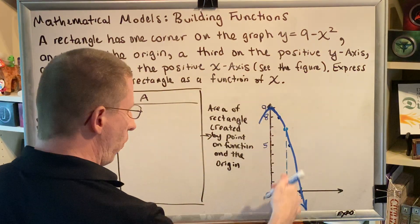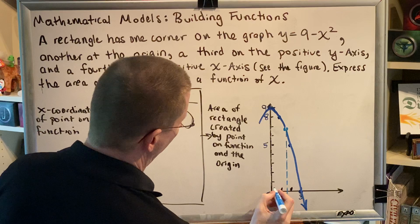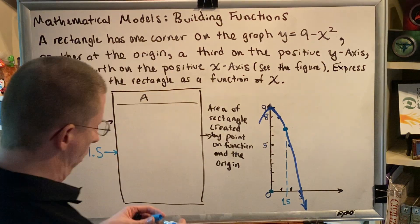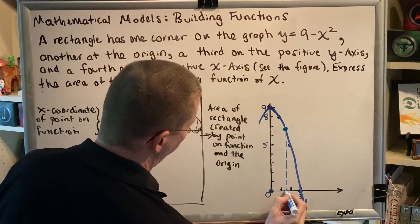This is the right side of the rectangle. The origin is one of the corners. This is one corner, and this is another corner.